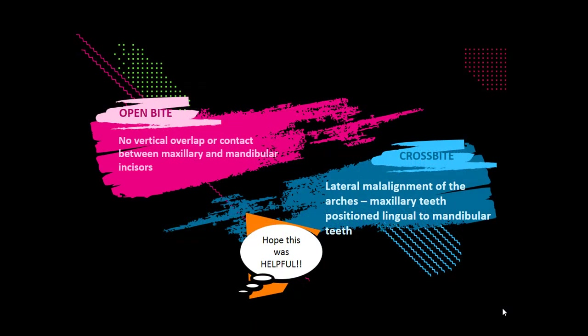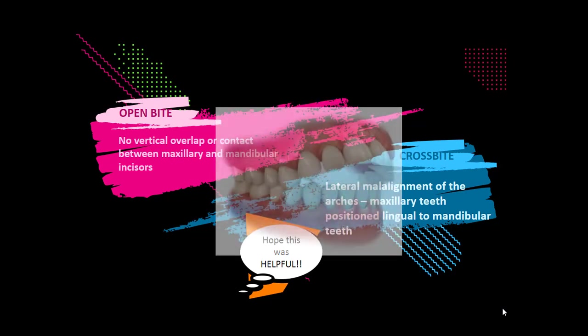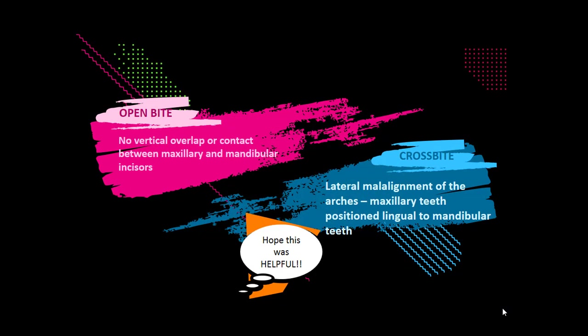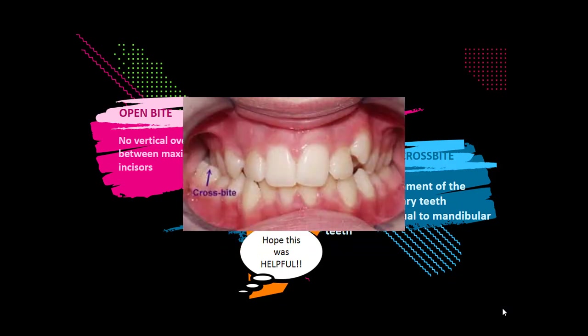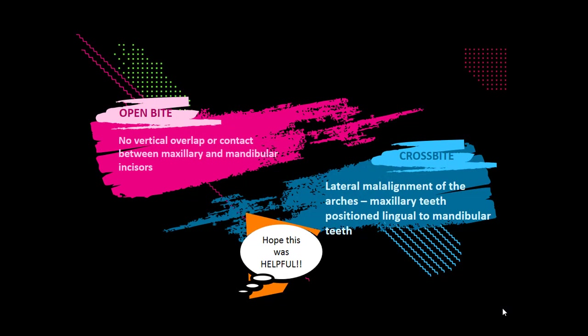Other malalignments to consider: an open bite is when there's no vertical overlap or contact between the maxillary and mandibular incisors, which is common with a tongue thruster or thumb sucker. A crossbite is a lateral malalignment of the arches where the maxillary teeth are positioned lingual to the mandibular teeth — patients may have this on one side or bilaterally. A patient with class 3 malocclusion will always have an anterior crossbite because the mandibular anteriors are going to be more labially positioned than the maxillary.